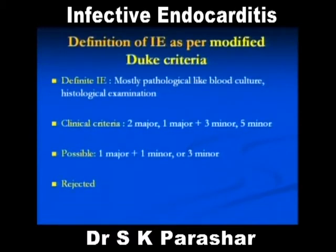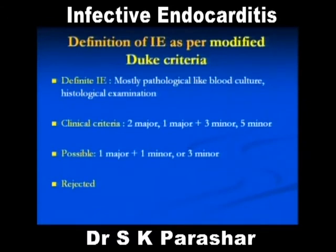I do not want to go into details — just go to Google and write 'modified Duke criteria for diagnosis of infective endocarditis.' You will get major criteria and minor criteria, which you can read from there. Just search for modified Duke's criteria for infective endocarditis.